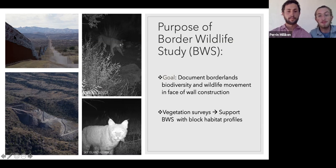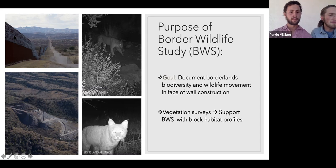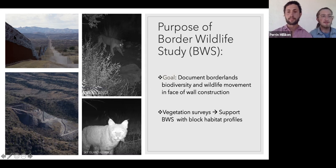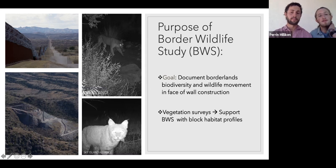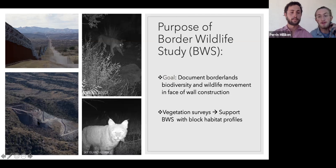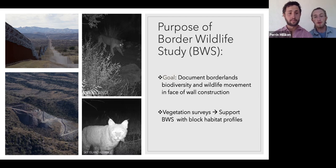Here we have a couple photos from the camera traps from Sky Island Alliance. You can see a mountain lion on the top right and a bobcat on the bottom right. Another part of the Border Wildlife Study are the vegetation surveys, which give us a more detailed look at the plant makeup of various different habitats along the border wall region. We also have a picture from directly next to the border wall, and below that, newly blasted border roads where new sections of the border wall were going to be created.